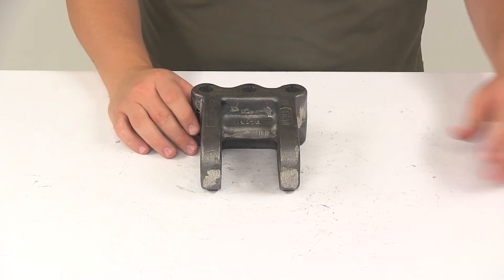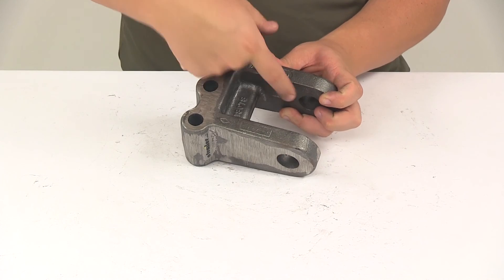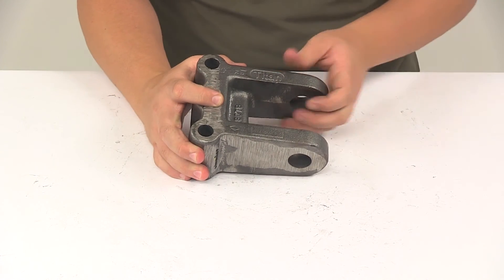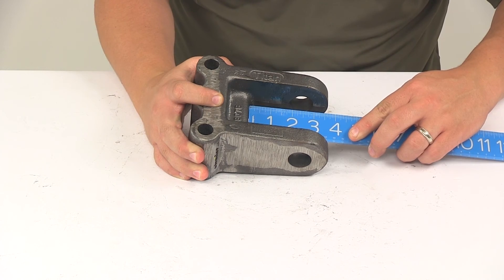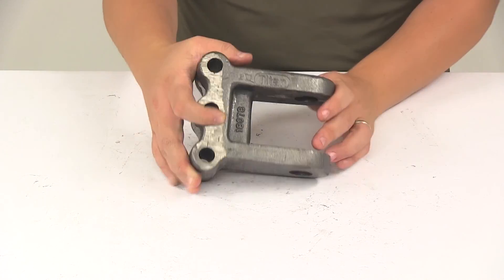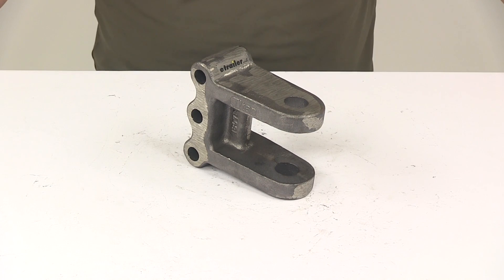If we take a measurement from the back of this area right here to the closest edge of the pinholes for the clevis, that's going to give us a measurement of about one and three quarters of an inch. That's going to do it for today's look at the Titan two-tang clevis.